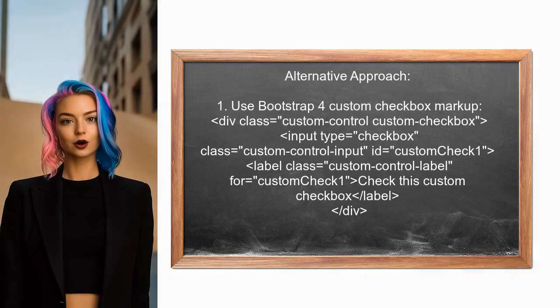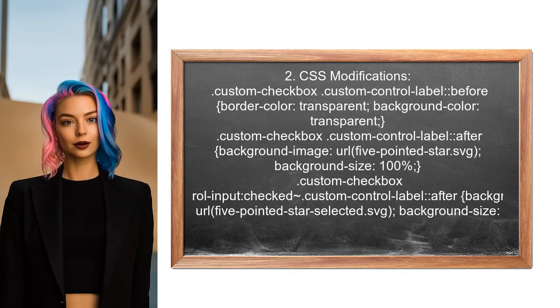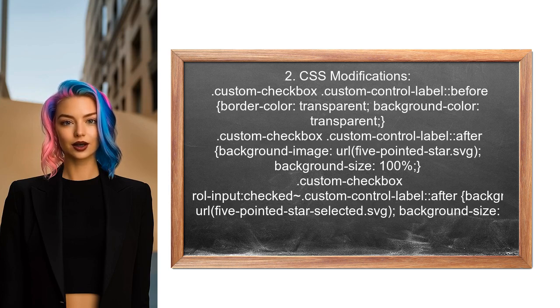Another approach involves using images instead of traditional checkboxes. Using Bootstrap 4's markup for custom checkboxes, you modify the CSS to incorporate a star image, with specific CSS rules to change the checkbox appearance including background images for both checked and unchecked states.